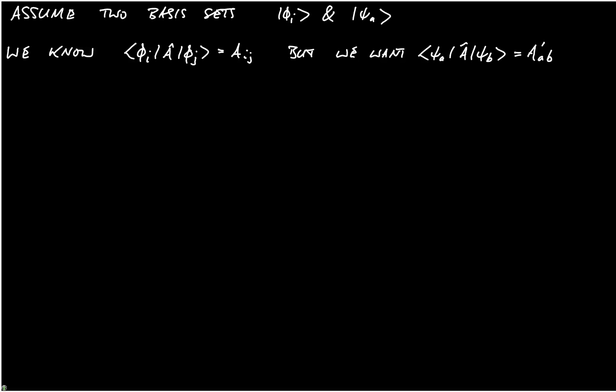We could expand psi in terms of phi, but just for a bit of variety, I'm going to actually expand phi_J in terms of psi_B. So, let's expand phi_J in psi_B. And we'll expand the bras as well. We'll expand bra phi_I in bra psi_A. And once we've done that, we will be able to see how to convert between the two different representations.